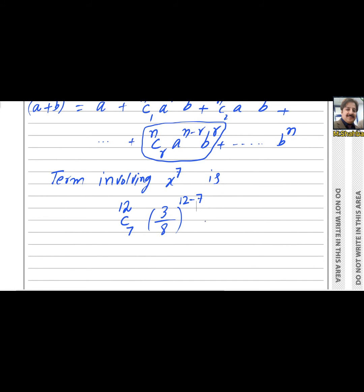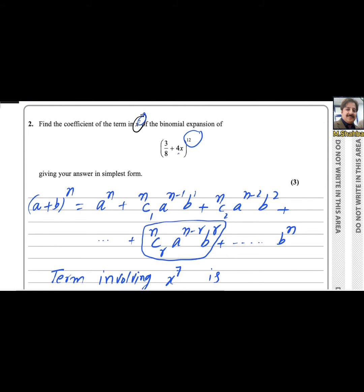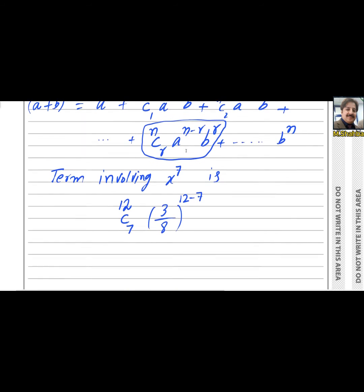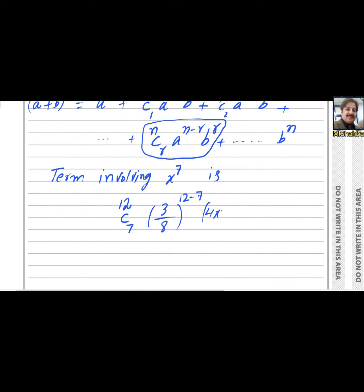And b is the second value, this one is the b. Therefore 4x to the power 7. So this will be the term involving x to the power 7: 12C7 times 3 over 8 to the power 12 minus 7 will be 5, and here you can get 4 to the power 7 alone, so it will be 4 to the power 7.